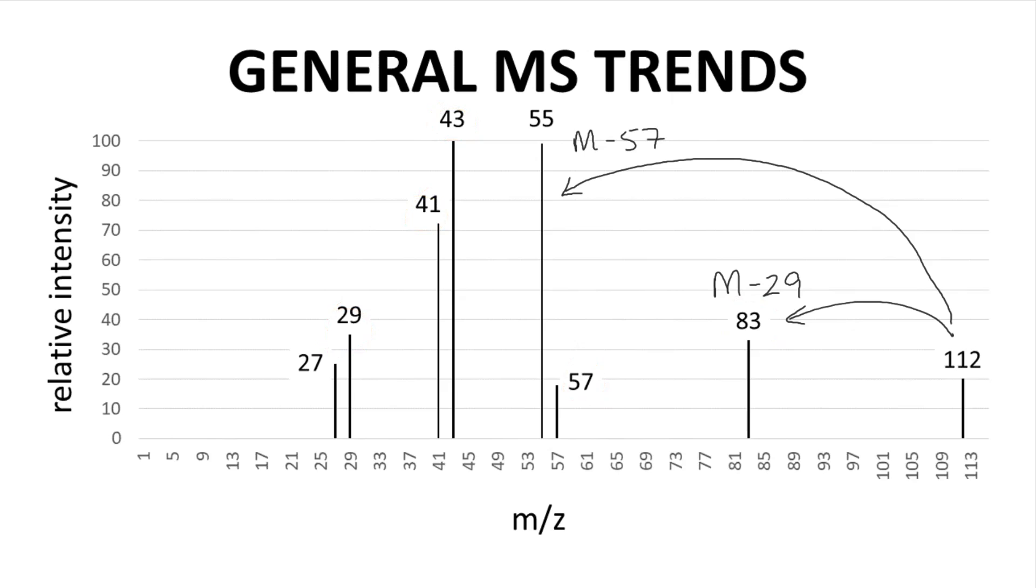Likewise, if the parent ion were odd, then peaks from single fragmentations would be even. It is rare for an even mass parent ion to give rise to an even mass fragment or for an odd parent to give odd fragments. It is possible, but not common.